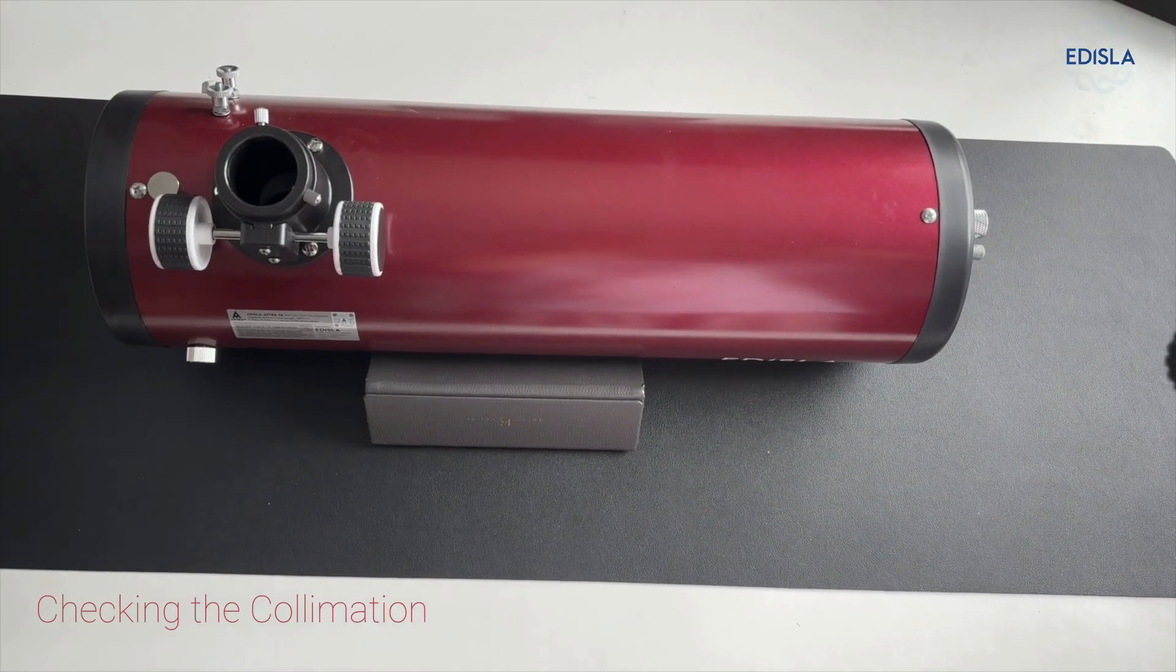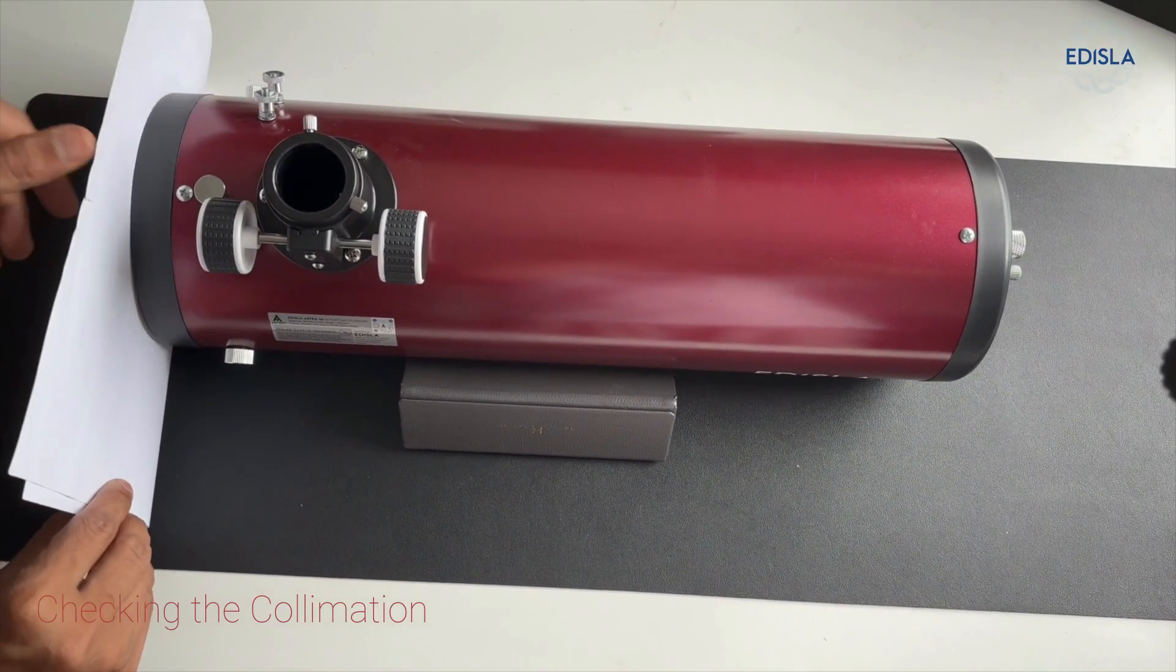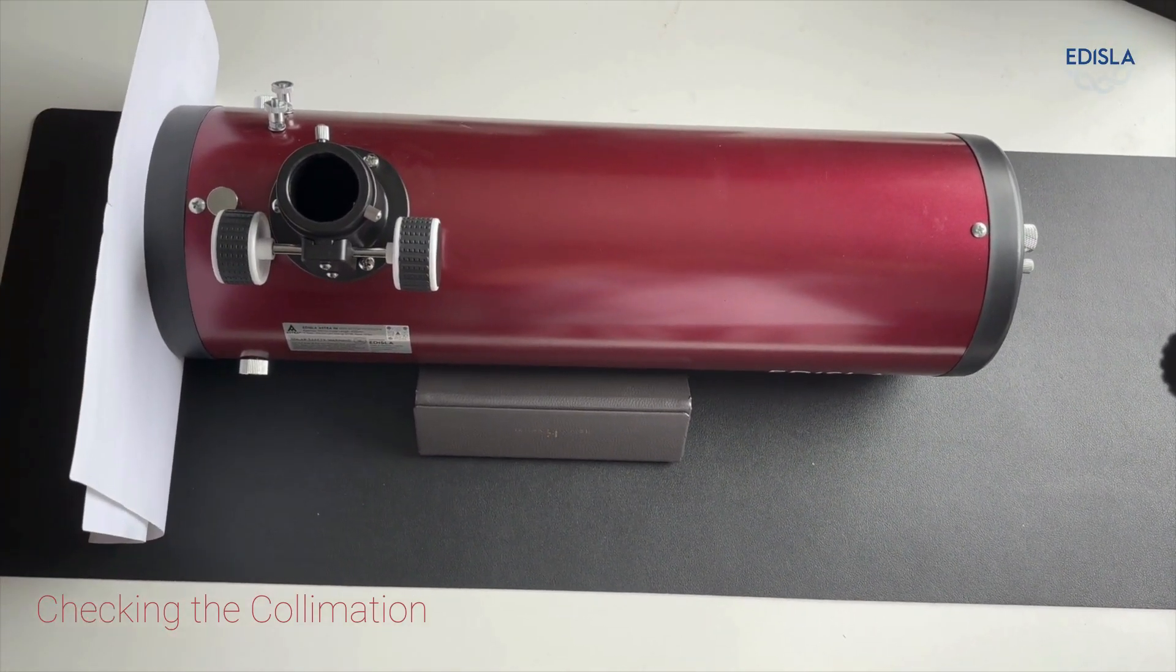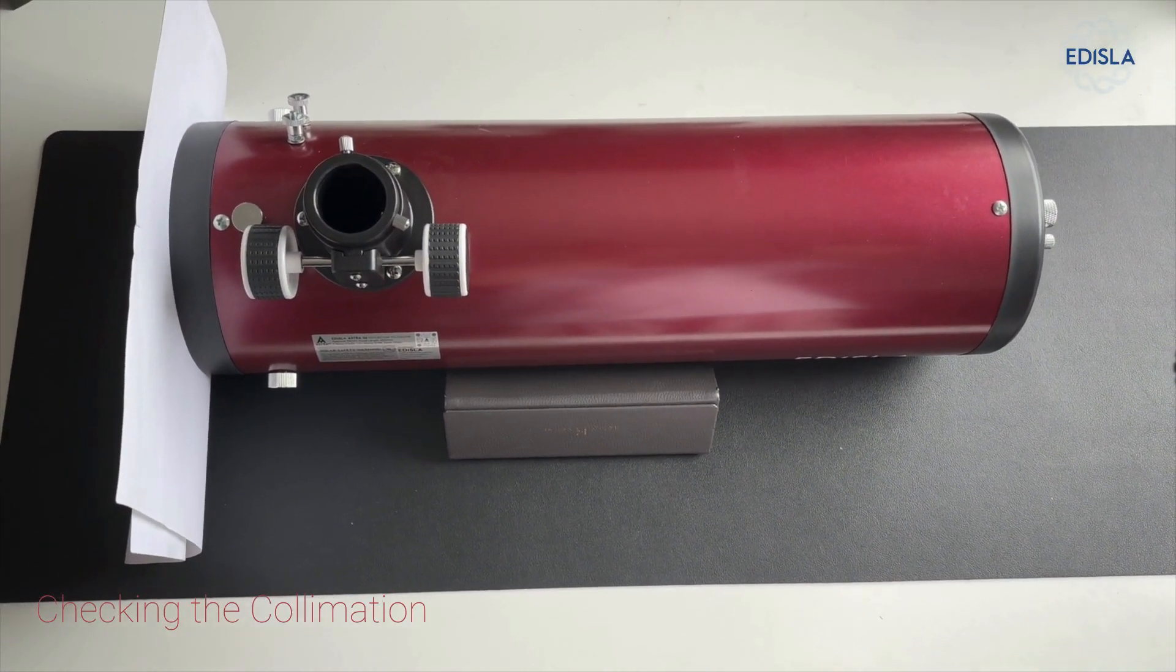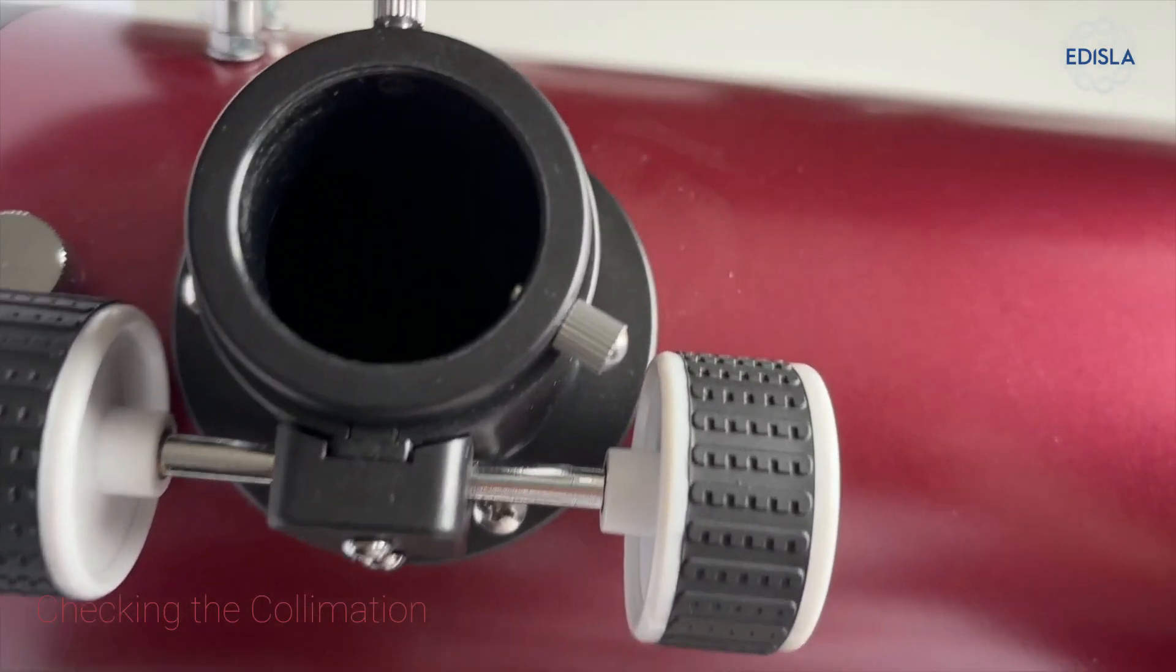To get started, find a flat table surface and take a comfortable seat. You'll need a white sheet to place in front of the tube for effective checking. Once your tube setup is ready, eyepiece removed and the focuser fully down, gently peer into the tube.